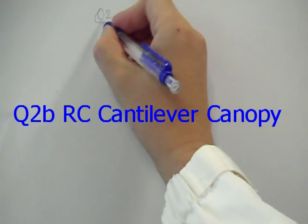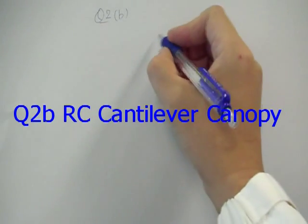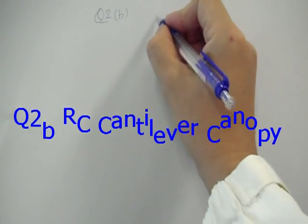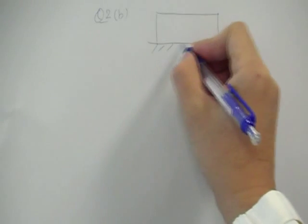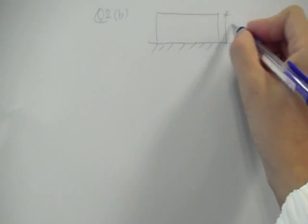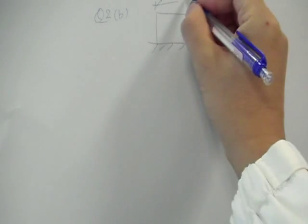In question 2 part B, you're given a cantilever canopy which looks something like this on plan. That's 2 meters and that's 6 meters.